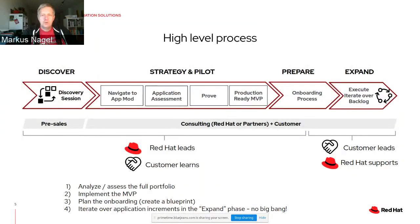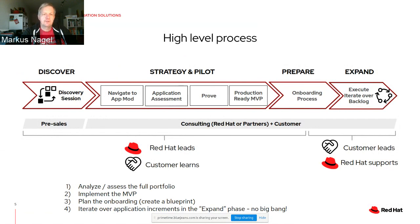A few words about how we at Red Hat Consulting typically tackle application migration projects. It all starts with a discovery session where we level set where the customer wants to go, what your priorities are, why you're moving to Kubernetes and OpenShift, and what your portfolio looks like. In the actual project, we start with what we call Navigate — a prescriptive set of workshops that help identify gaps in the technology landscape, like CI/CD processes. Then we come to the core point: the application assessment, basically assessing the portfolio of applications.